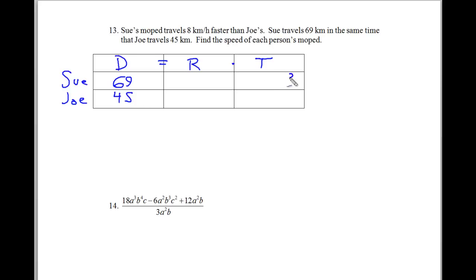It looks like Sue is traveling 69 kilometers in the same time that Joe travels 45 kilometers. So we don't know our time. We don't know how long it takes them. But we do know that the time is exactly the same. Because Sue travels this in the same amount of time as Joe travels that.